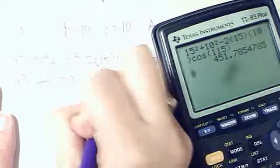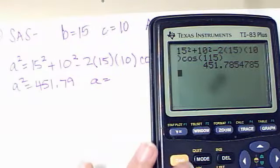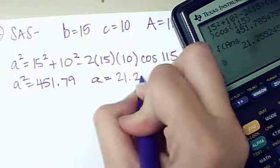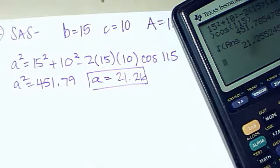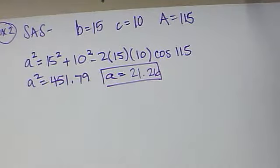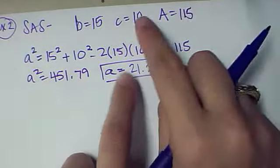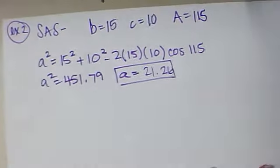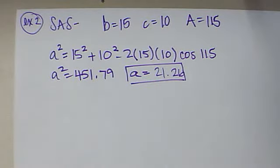So, that means a equals the square root of that number, so second square root, second answer, and that is 21.26. There's that side. Now, you might be asking yourself, well, I'm more comfortable with law of sines, so I want to use that to find my B and C, and that'd be fine. Today, we're trying to learn the law of cosine, so I'm not going to do it that way.